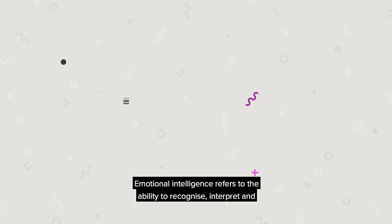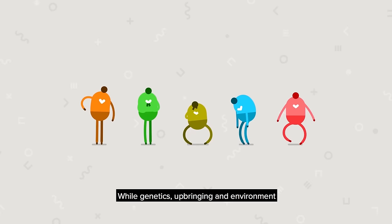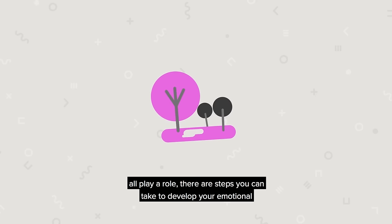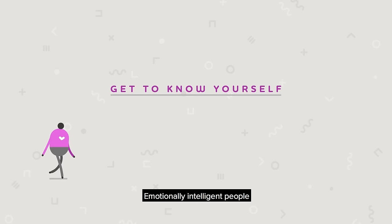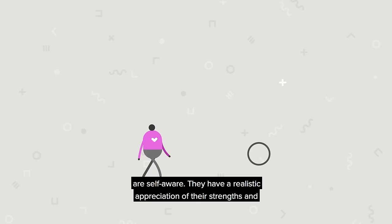Emotional intelligence refers to the ability to recognize, interpret, and process emotions in yourself and others. While genetics, upbringing, and environment all play a role, there are steps you can take to develop your emotional intelligence over time.